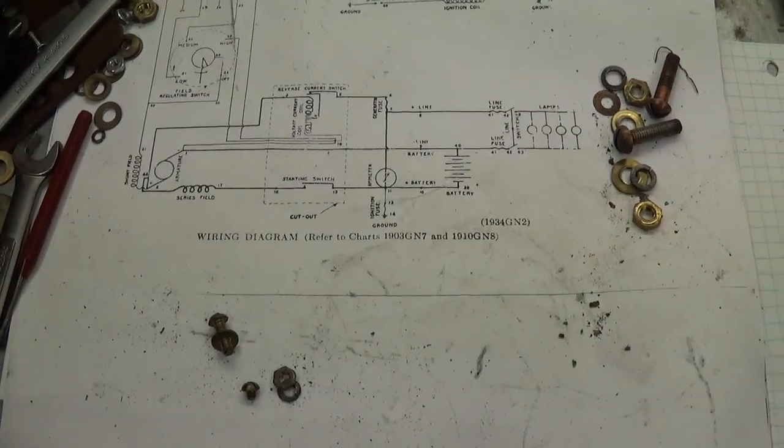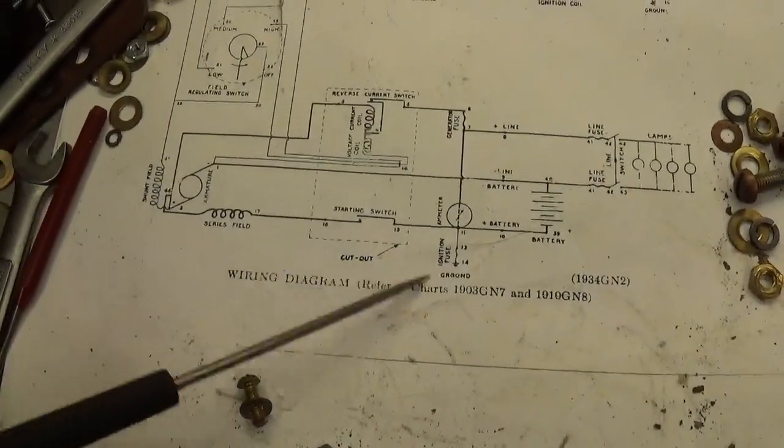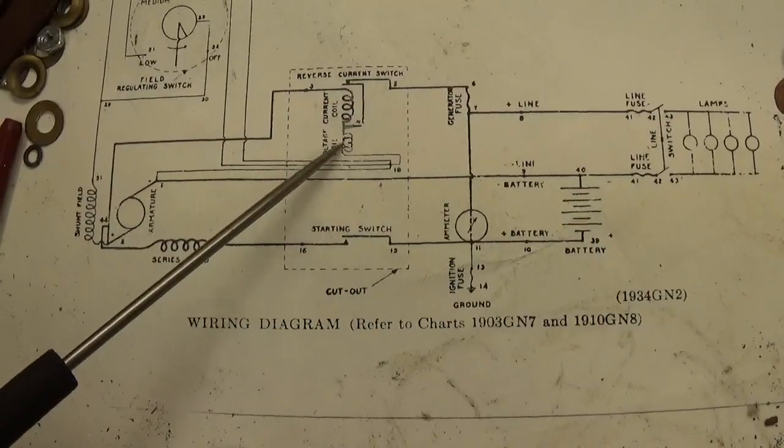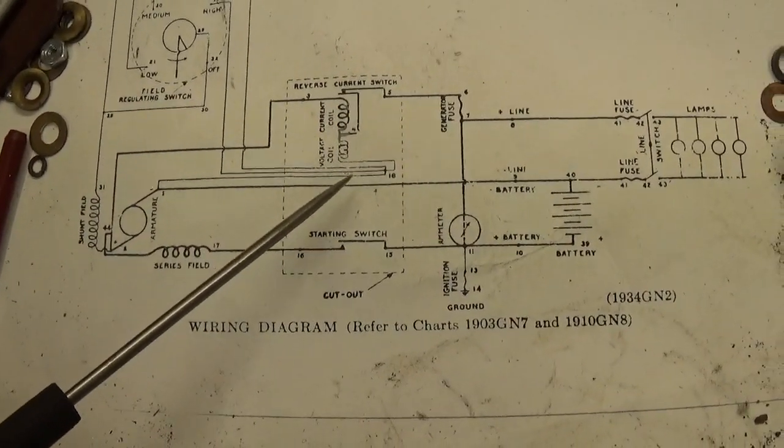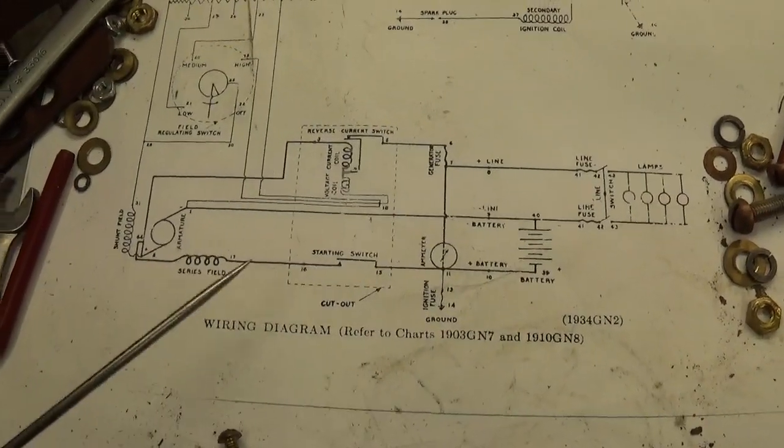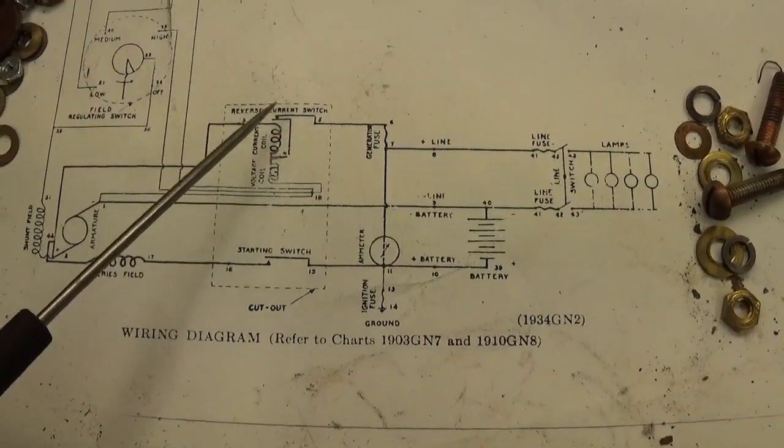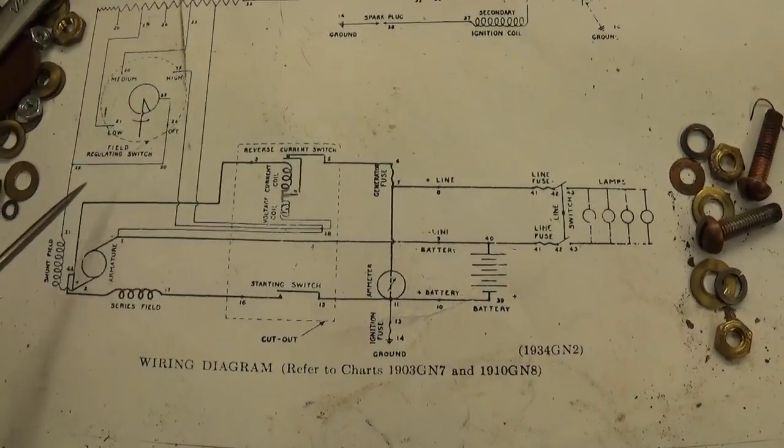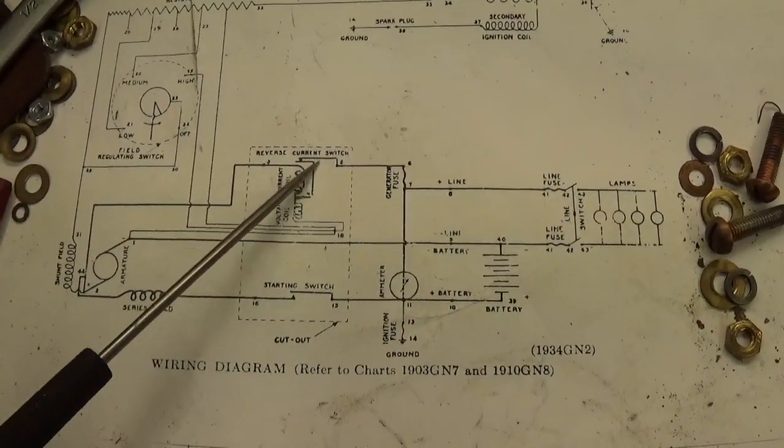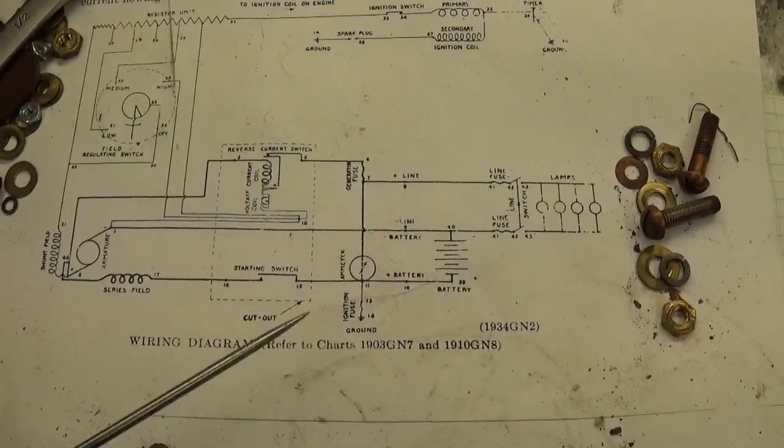The major one has to do with this reverse current relay. Fairbanks calls it. This winding right here, they called the voltage coil, is open circuit. And I'll show you what that looks like. I have it already pulled out. Basically, this coil here closes this contact when the generator voltage overcomes the battery voltage enough to charge them. Then you get this contact here closing, which allows the current to flow.